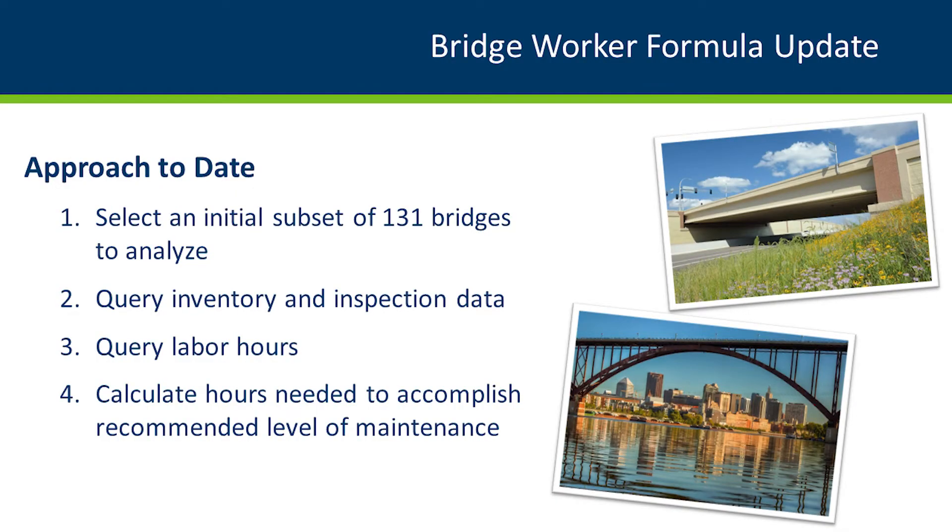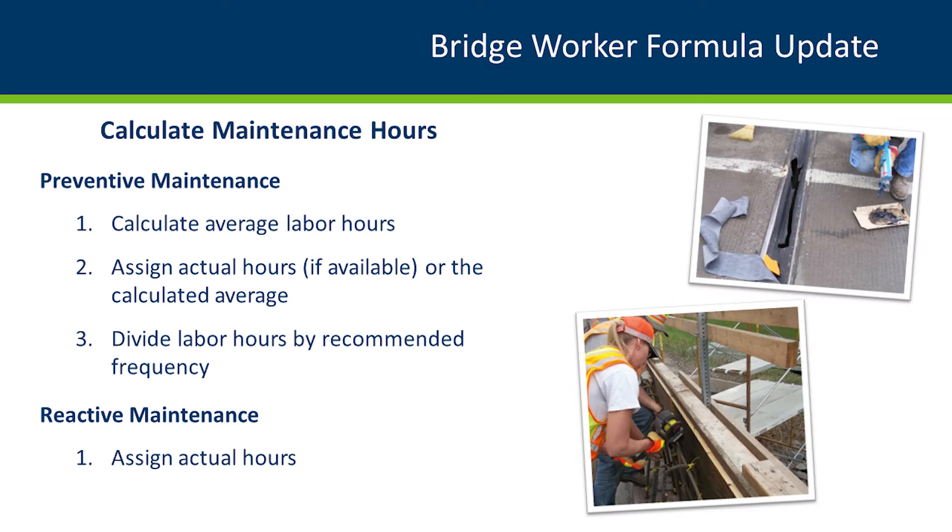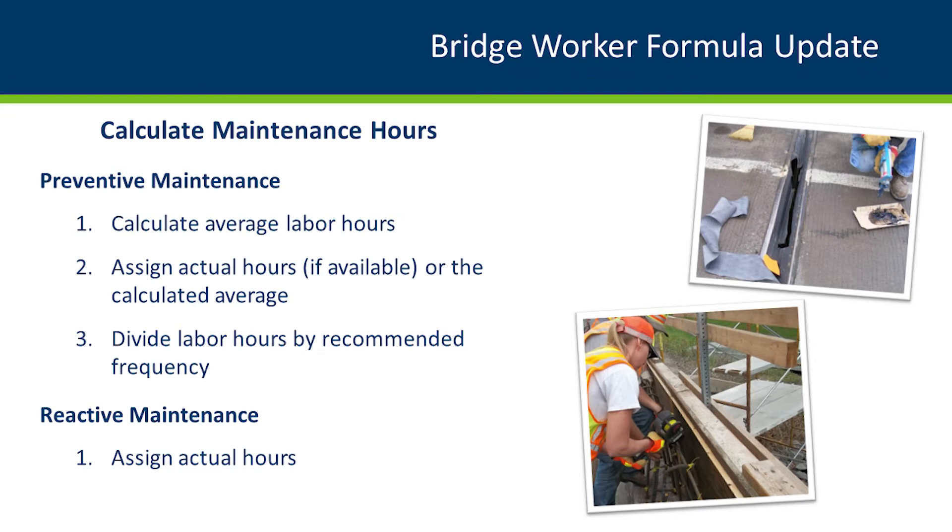The idea is to calibrate the 1991 formula against the recommended level of maintenance. We don't have enough resources to maintain all structures to that recommended level, but we want the formula to predict the labor hours needed to reach it. To calculate those recommended maintenance hours for preventive maintenance, we looked at our timesheet information. We track all maintenance tasks within a SIMS maintenance module through Bentley AssetWise and also through our timesheet system, combined in a data analysis tool for cost information. We calculated average labor hours to perform preventive maintenance — specifically flushing, crack sealing, deck sealing, and poured joint sealing.